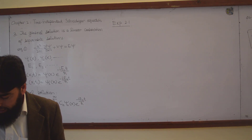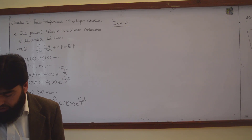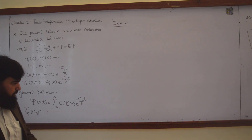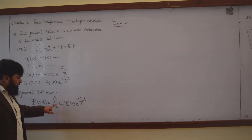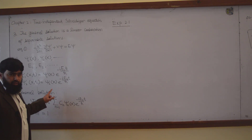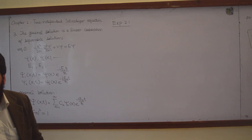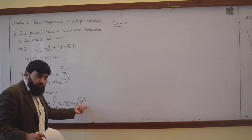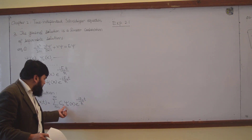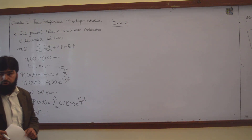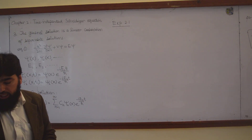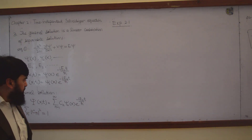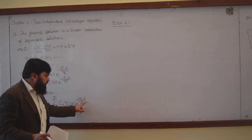The particle starts out as a linear combination of just two stationary states, meaning n will run from 1 to 2 only. The linear combination is C1 ψ1 e^(-iE1t/ℏ) plus C2 ψ2 e^(-iE2t/ℏ). Since it starts out, time is equal to zero.